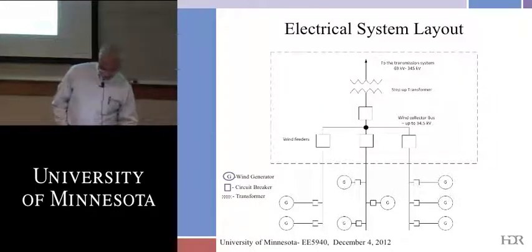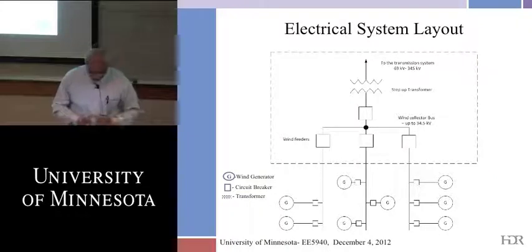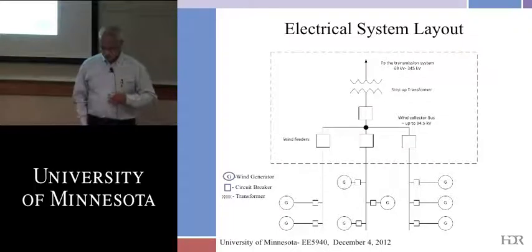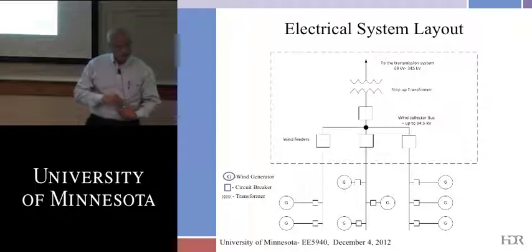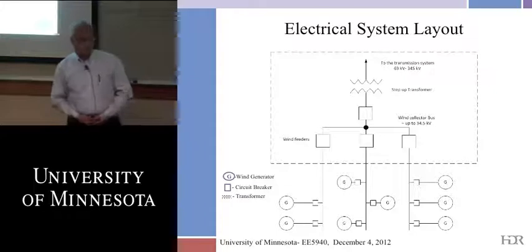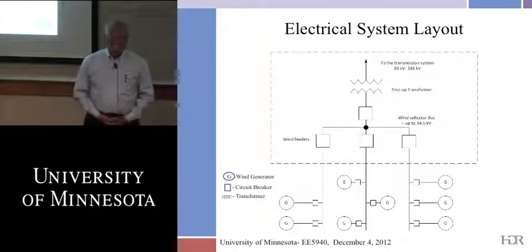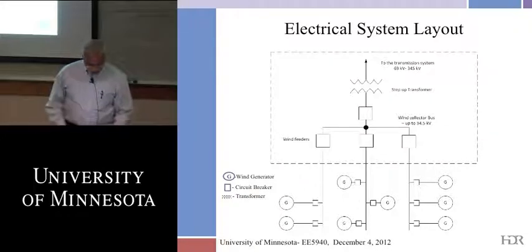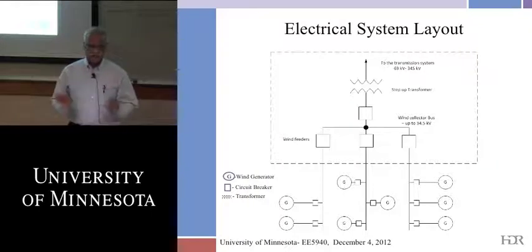From the collector substation, power is stepped up to transmission level voltage — 69 to 345 kV. Wherever there is a transmission line and wind resource, a step-up transformer connects the wind farm to the grid. This is represented as a general one-line diagram, which shows topographically how the system is connected without drawing all three phases.